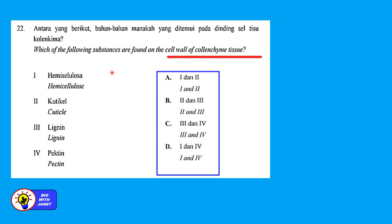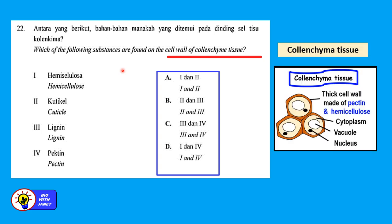Question 22: which substances are found on the cell wall of collenchyma tissue? Collenchyma tissue consists of collenchyma cells where there is thickening of the cell wall, especially at the corners. The thickened cell wall is made up of pectin and hemicellulose. So the answer is number one and number four — answer D.